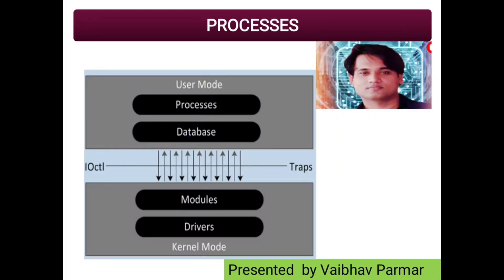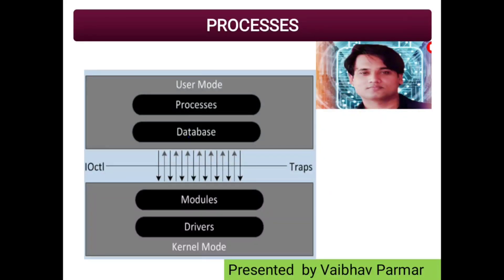CheckPoint component architecture is actually divided into two modes or phases. One is your user mode phase or process, and the other one is kernel mode process or phase, where each process is responsible for several operations. As shown on screen, the CP components architecture is divided into user mode and kernel mode.